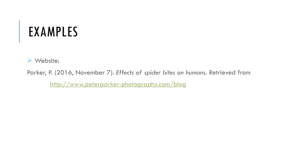Here are some examples of citations you will probably use most often. Here is a citation for a website. The author's last name goes first followed by their first initial. The date comes next, put in parentheses with the year first. The title of the website is in italics and only the first letter and proper nouns are capitalized. Finally, we put 'retrieved from' and the URL.